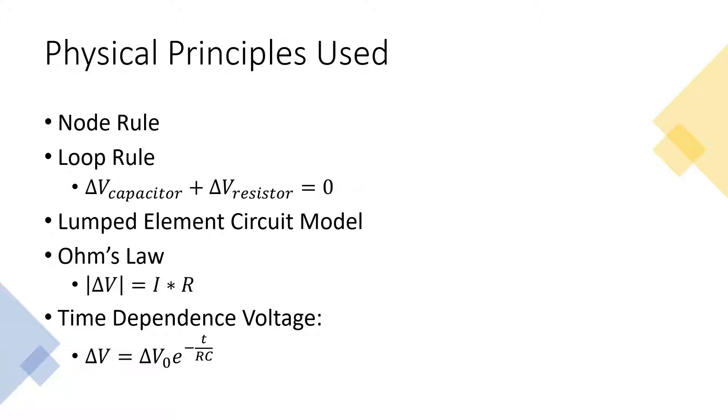Ohm's law provides the equation for calculating electric potential difference, and finally, the time dependence of voltage in our RC circuit gives us the following equation. This equation offers the basis for solving for RC time constant, which will be explained in this lab.